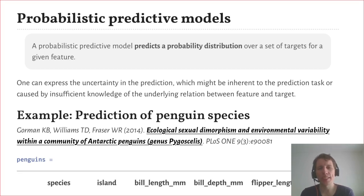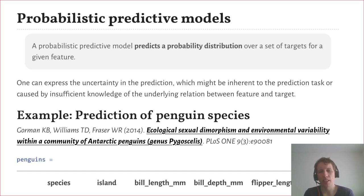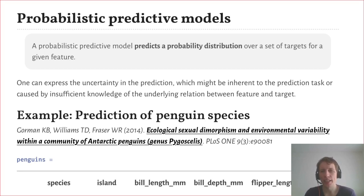First of all, what are probabilistic models? The main characteristic of these models is that they output a probability distribution, as the name indicates, instead of just single targets. The motivation for these models is that by outputting a probability distribution we can capture the uncertainty in the prediction. It can arise both from some inherent stochasticity in the prediction task but also be caused by insufficient knowledge or insufficient data. I use the term target here because this is not restricted to classification problems. Nevertheless, for illustration purposes I will mostly use a classification example in this talk.